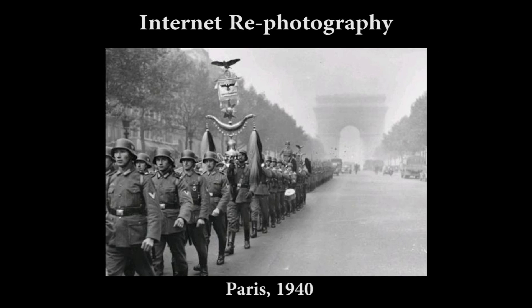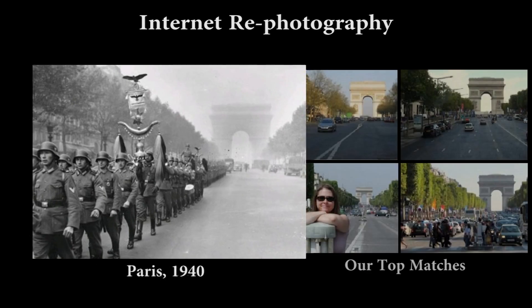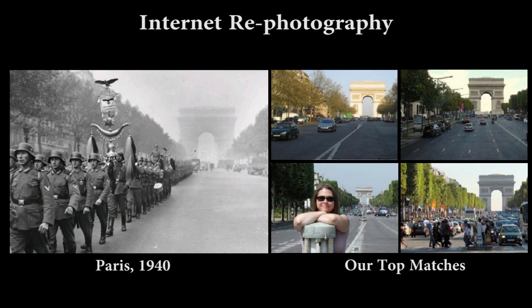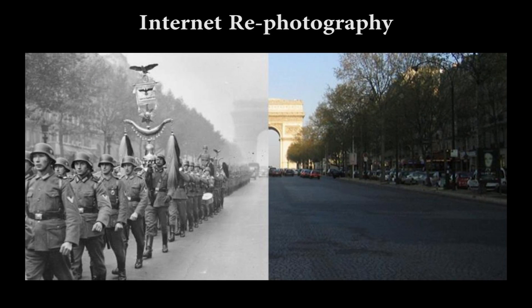To do re-photography, we want to use the internet to find modern images of the place shown in a given historical photograph. We pick the top match and manually generate an old-new montage.